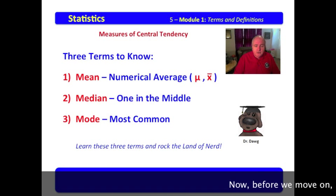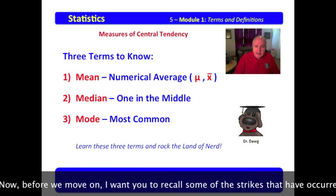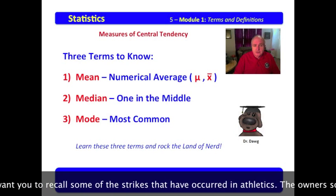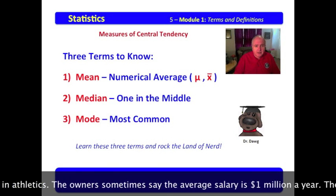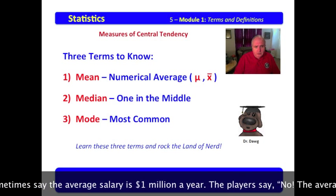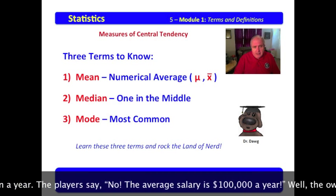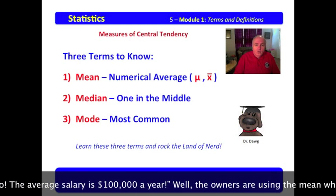Now, before we move on, I want you to recall some of the strikes that have occurred in athletics. The owners sometimes say the average salary is a million dollars a year. The players say, no, the average salary is $100,000 a year.